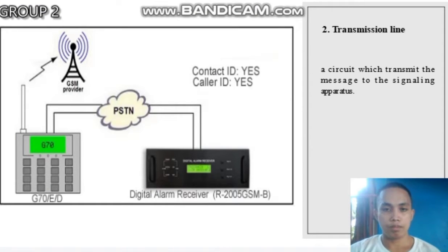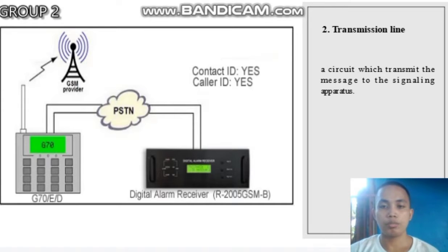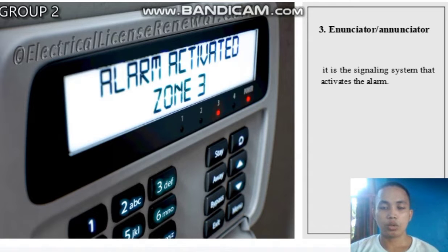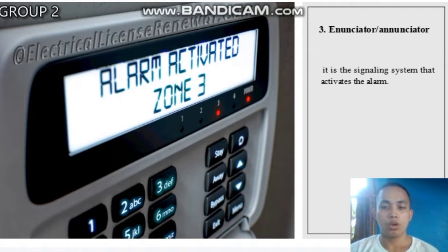The second basic part is the transmission line — a circuit which transmits a message to a signaling apparatus. A security system's transmission line carries alarm information from a protected area to a central monitoring area that is remote from the protected area. The alarm source means the screening inclusion; the detector means the protected area cell. The third basic part is the enunciator or annunciator — a signaling system that indicates the alarm. The annunciator indicates the exact location of the alarm or problem, such as motion, faulty doors or windows, or glass breakage. The annunciator panel shows where an alarm has been triggered and the status of security sensors around the premises.